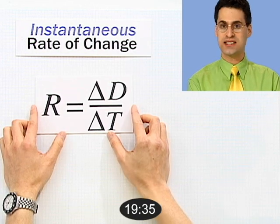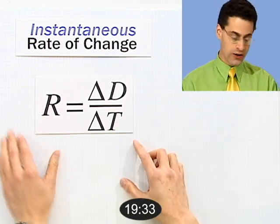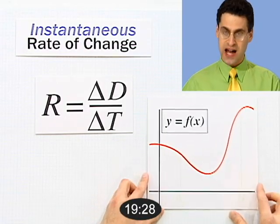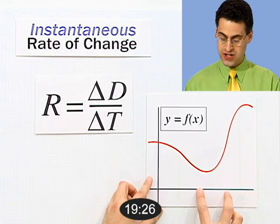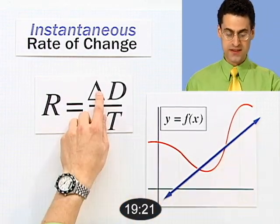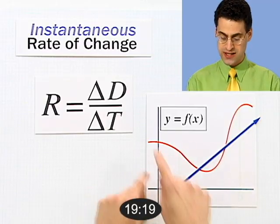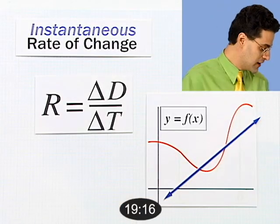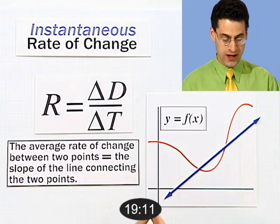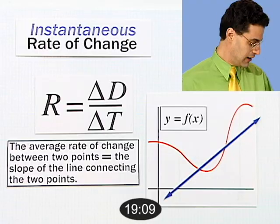Question one: instantaneous rate of change. Rate is just change in distance over change in time — distance equals rate times time. If you graph a function representing distance against time, the change in time and change in distance give you a slope of a line — rise over run. So the average rate of change between two points equals the slope of the line connecting them.